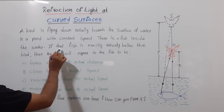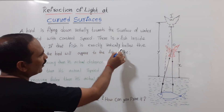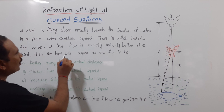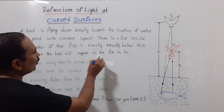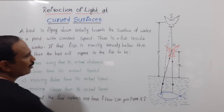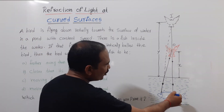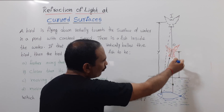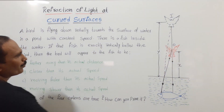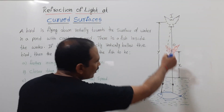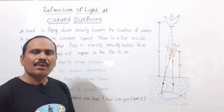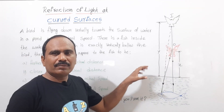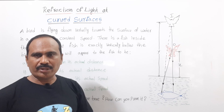If that fish is exactly vertically below the bird, then how will the bird appear to the fish? For this situation, they are given four options.